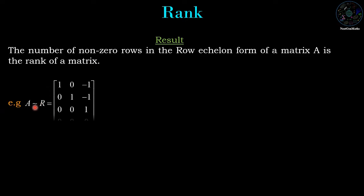For example, suppose R is a row echelon form of matrix A, which is: row 1: 1, 0, -1; row 2: 0, 1, -1; row 3: 0, 0, 1; row 4: 0, 0, 0. In this row echelon form we have 3 nonzero rows, therefore the rank of matrix A is 3.